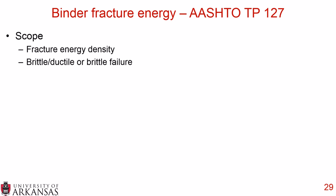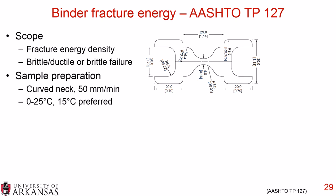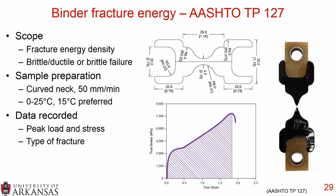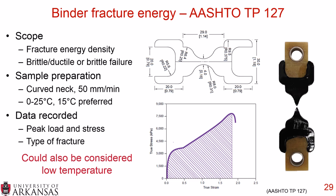The binder fracture energy test (AASHTO TP127, provisional) captures fracture energy density to quantify brittle/ductile failure modes. The curved-neck sample is pulled apart at 50 mm/min between 0 and 25°C, with 15°C preferred. Peak load, stress, and type of fracture are recorded — some necking indicates brittle-ductile failure. This test spans both intermediate and low temperature regimes depending on testing temperature.